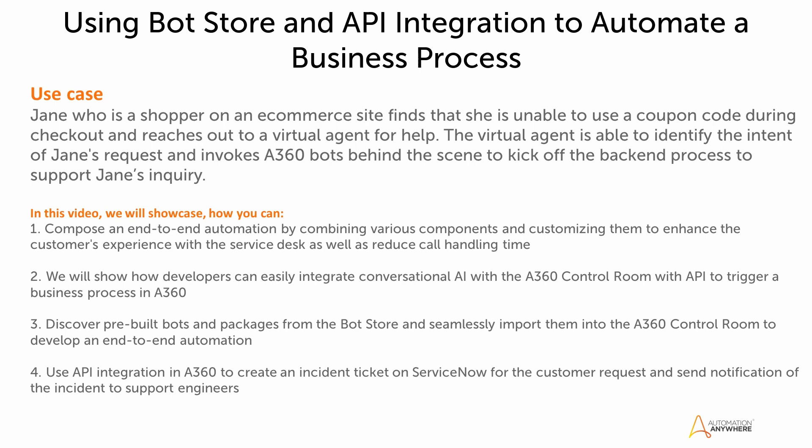We will show how developers can easily integrate conversational AI with the Automation 360 control room with API to trigger a business process in Automation 360. We'll also discover pre-built bots and packages from the bot store and seamlessly import them into the Automation 360 control room, and use API integration in Automation 360 to create an incident ticket on ServiceNow for the customer request and also send notification of the incident to support engineers.